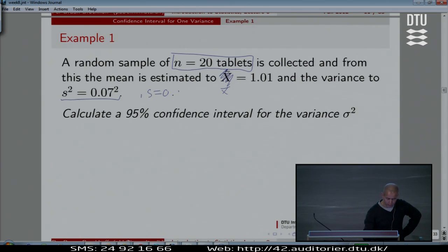And the variance was computed at 0.07. That is, the standard deviation was 0.07, and the variance is the square of this. Let's try to find out a confidence interval for this variance now.